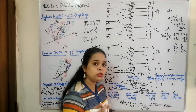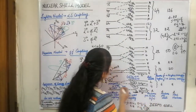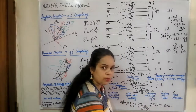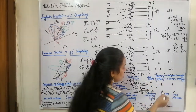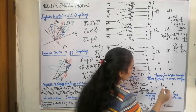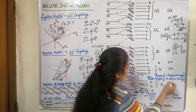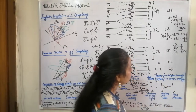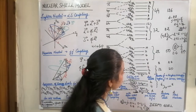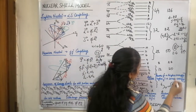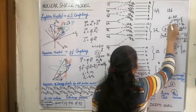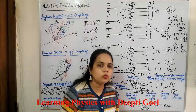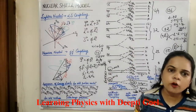To calculate nucleons per shell, we add up the 2J+1 values. The first shell has 2 nucleons. Adding the 2P levels (2+4) gives 6, cumulative total 8. Adding the 3D and 2S levels gives 12 more, cumulative total 20. Continuing to add nucleons per shell gives cumulative totals of 2, 8, 20, 28, 50, 82, and 126 — which are precisely the magic numbers. The shell model successfully explains the existence of magic numbers.